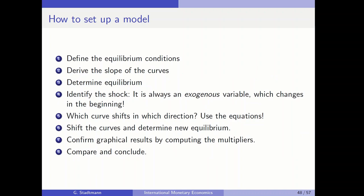How do we set up a model? Please have a look at these eight steps. In the first step we define the equilibrium conditions. Afterwards we derive the slope of the curves. In the third step we determine the equilibrium, and then a shock occurs — one exogenous variable changes. We need to know which curve shifts and in which direction, using the equations. In the graph we shift the curves and determine the new equilibrium. Afterwards we confirm the graphical results by computing multipliers, and in the last step we compare the graphical and formal results and conclude.